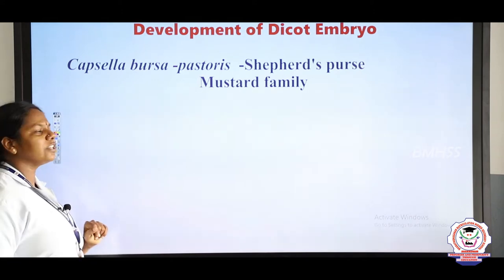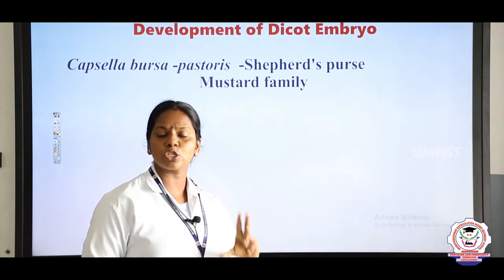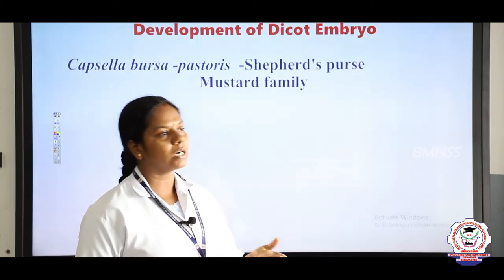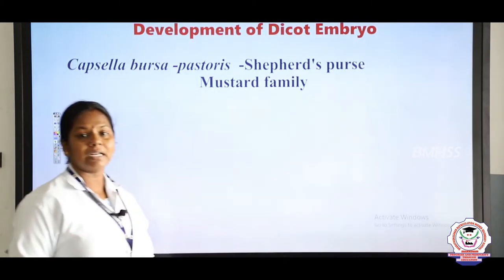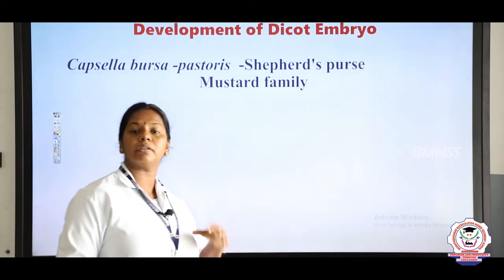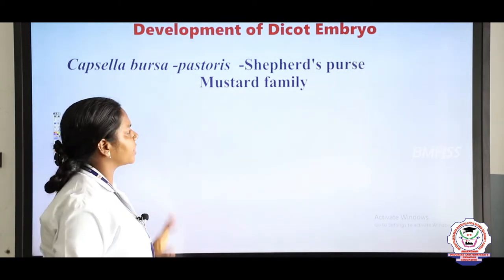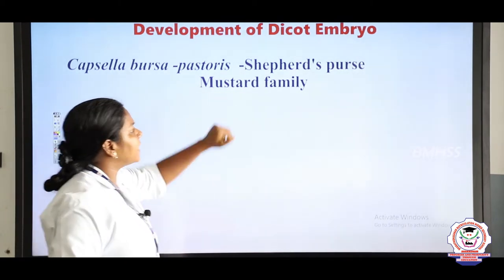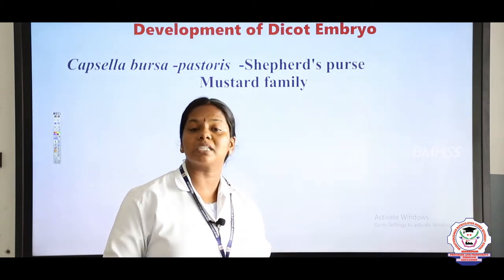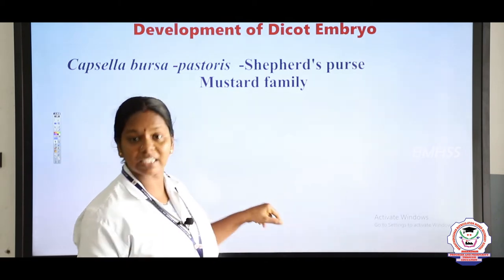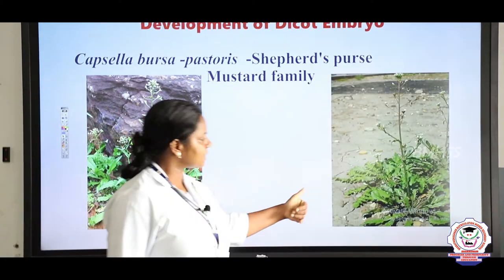First we are going to study about the development of the dicot embryo. Dicot means plants which have two cotyledons — example, groundnut, beans. The example we are going to see for embryo development is the plant Capsella bursa-pastoris, commonly called the shepherd's purse. It belongs to the mustard family and can be seen on the roadside. This is the image of this plant.